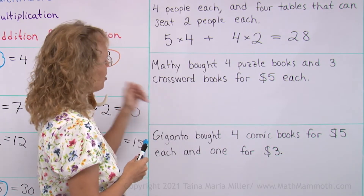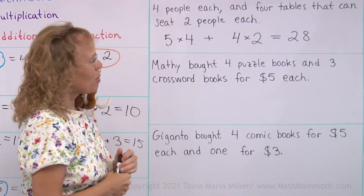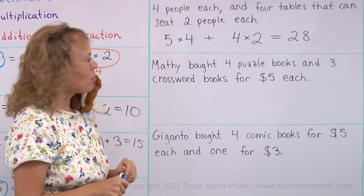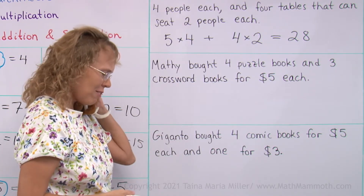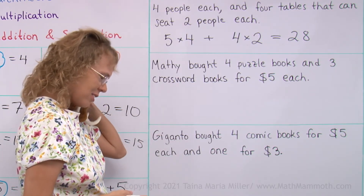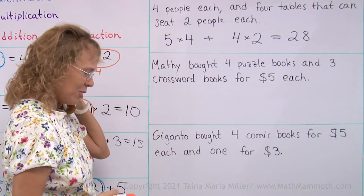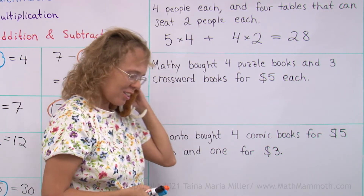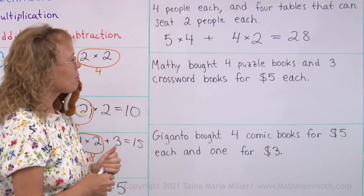Matthew got to go shopping. Matthew bought 4 puzzle books. He says he's going through them real quick.